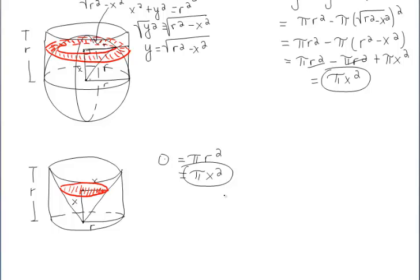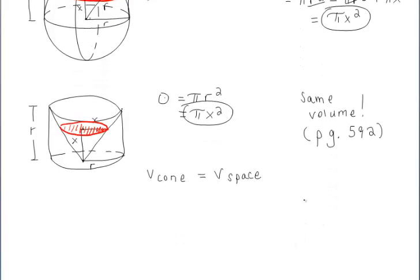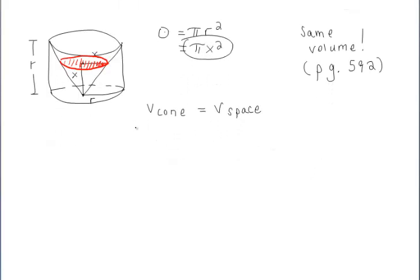Using Cavalieri's principle (page 592 in your textbooks), which states that if two solids A and B can be placed with their bases coplanar, and if the area of every cross section of A equals the area of every coplanar cross section of B, then A and B have equal volumes. Since both the ring and the circular slice within the cone at height x have area πx², and both figures have the same height r, the volume of the cone equals the volume of the space outside of the hemisphere within the cylinder.